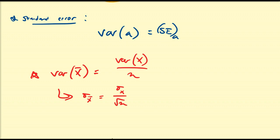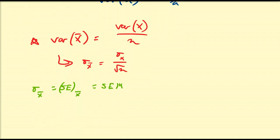There are a few common notations: some people write this as sigma x-bar, some write it as SE sub x-bar, and some just write SEM — the standard error of the mean. What this says is that there is some error associated with using x-bar to approximate mu. As we increase the sample size n, so as n approaches capital N or approaches infinity, sigma x-bar approaches zero.